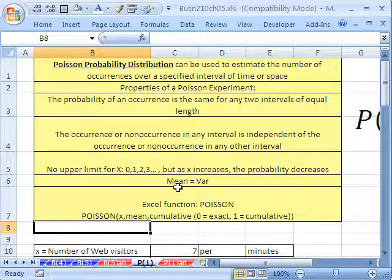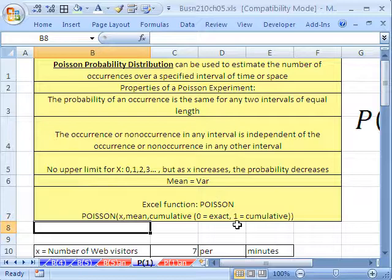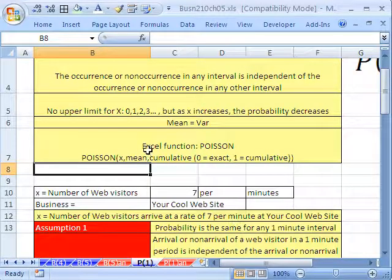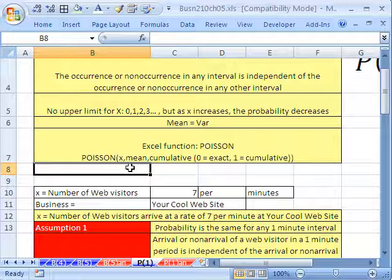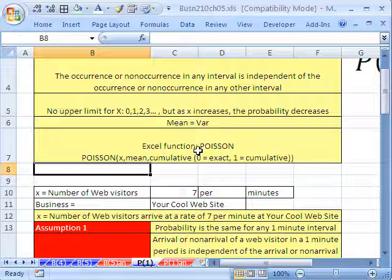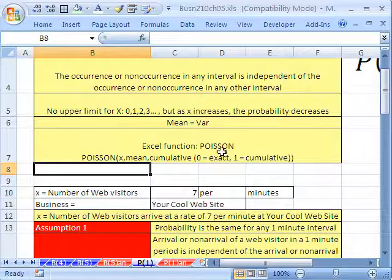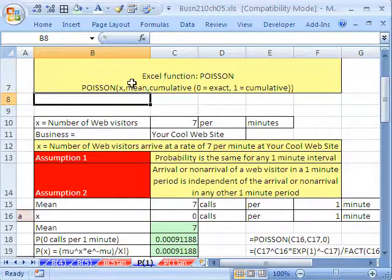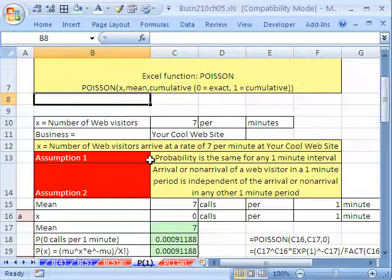Also, the mean equals the variance for Poisson probability distribution. We are going to use the Excel function POISSON. It just needs an x, a mean, and then you say zero for exact. You're going to get exactly five cars into a car wash. Or cumulative, two or fewer cars over the next 15 minutes. Now, one thing that's very nice is all you really need is the mean and then your x, and you can calculate this.